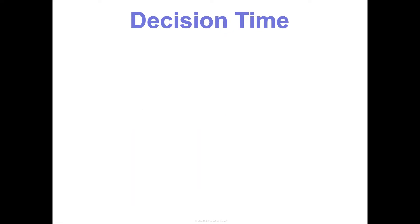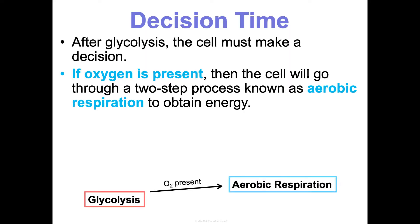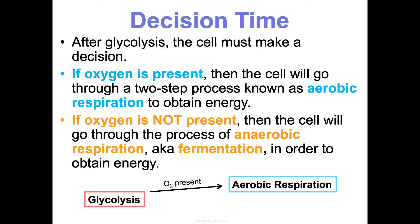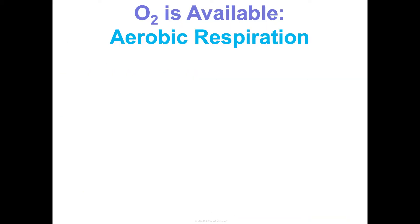After this pre-step of glycolysis, the cell has to make a decision. If there's oxygen, it's going to go through aerobic respiration to get energy. If there's not, it's going to go through anaerobic respiration, which is also known as fermentation. First, we'll talk through aerobic respiration when oxygen is available.